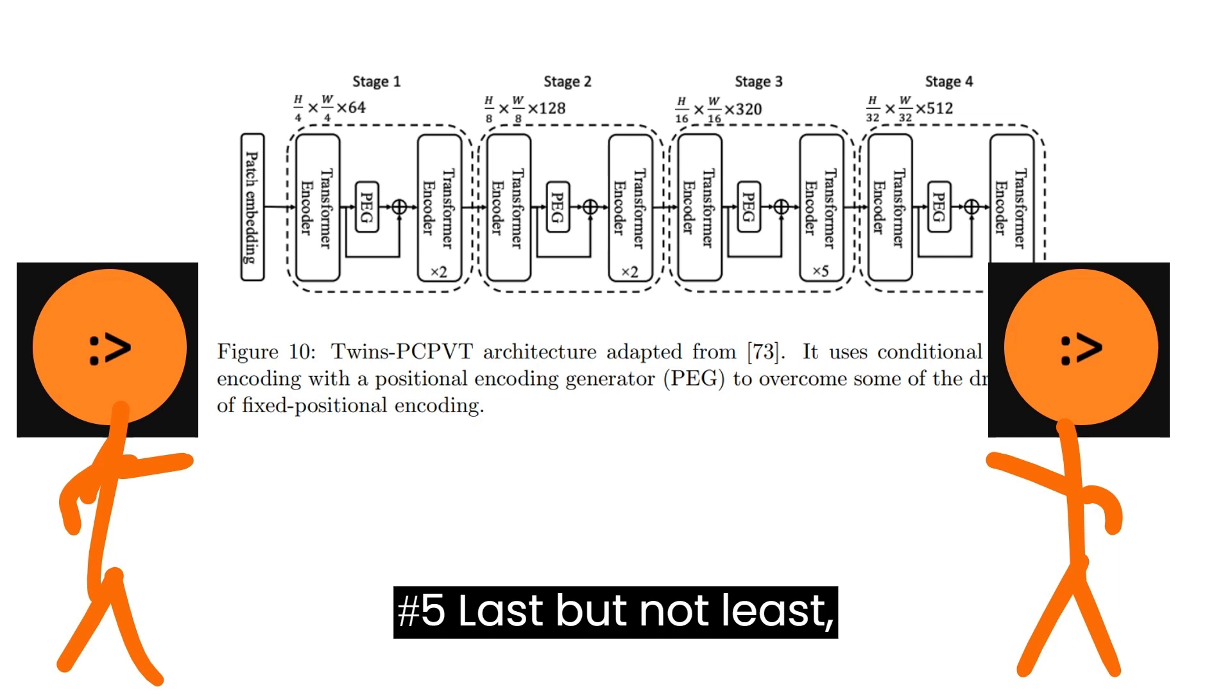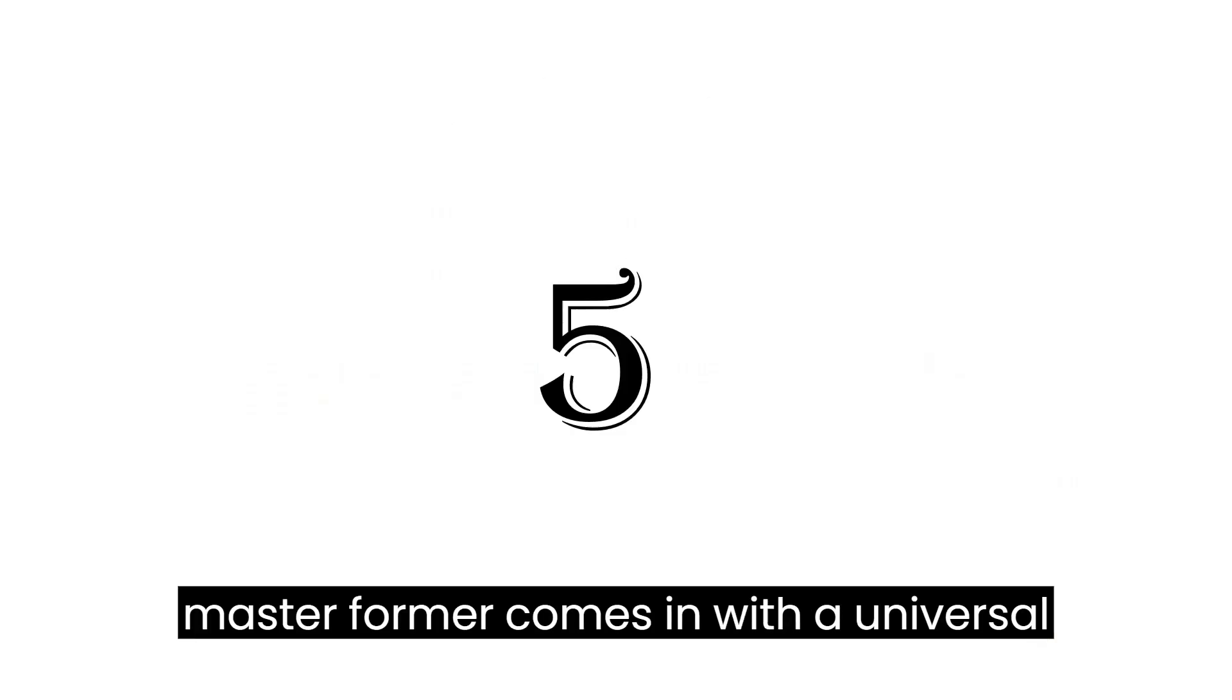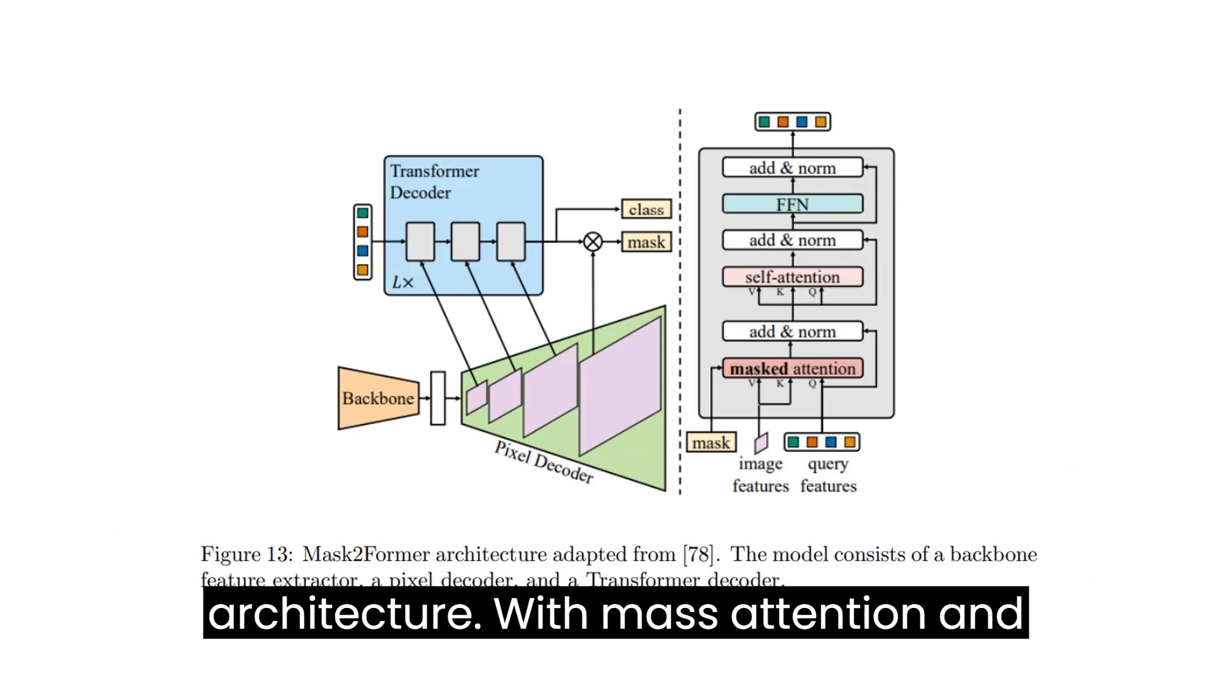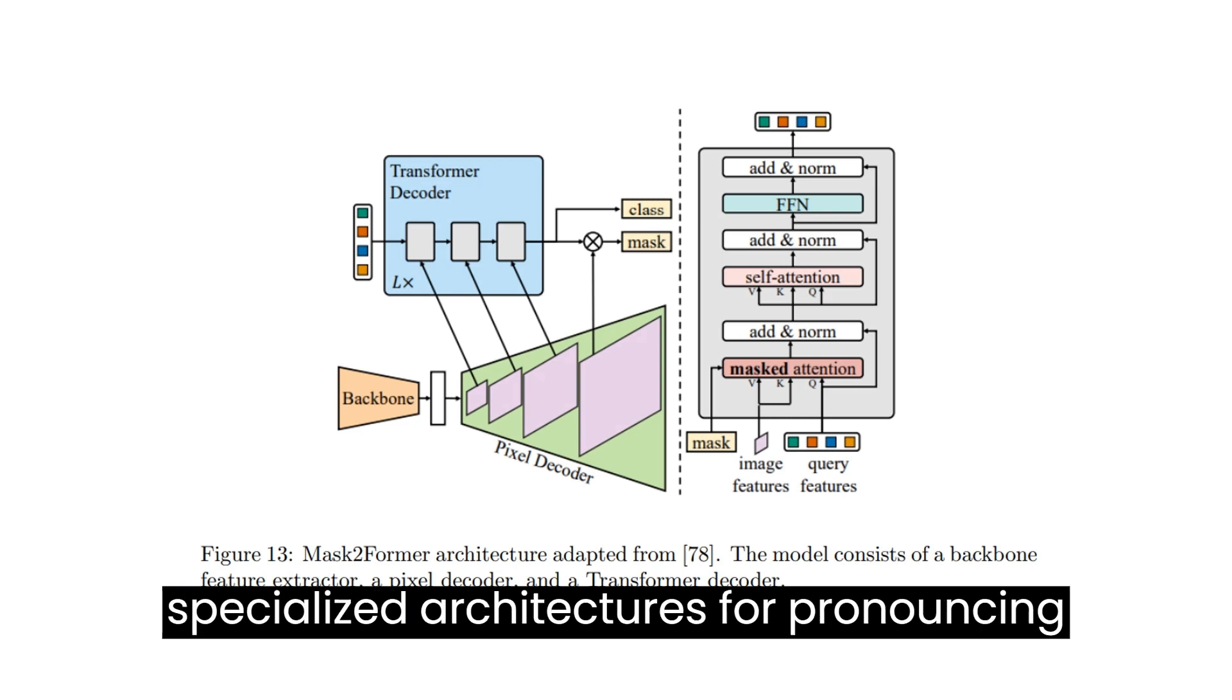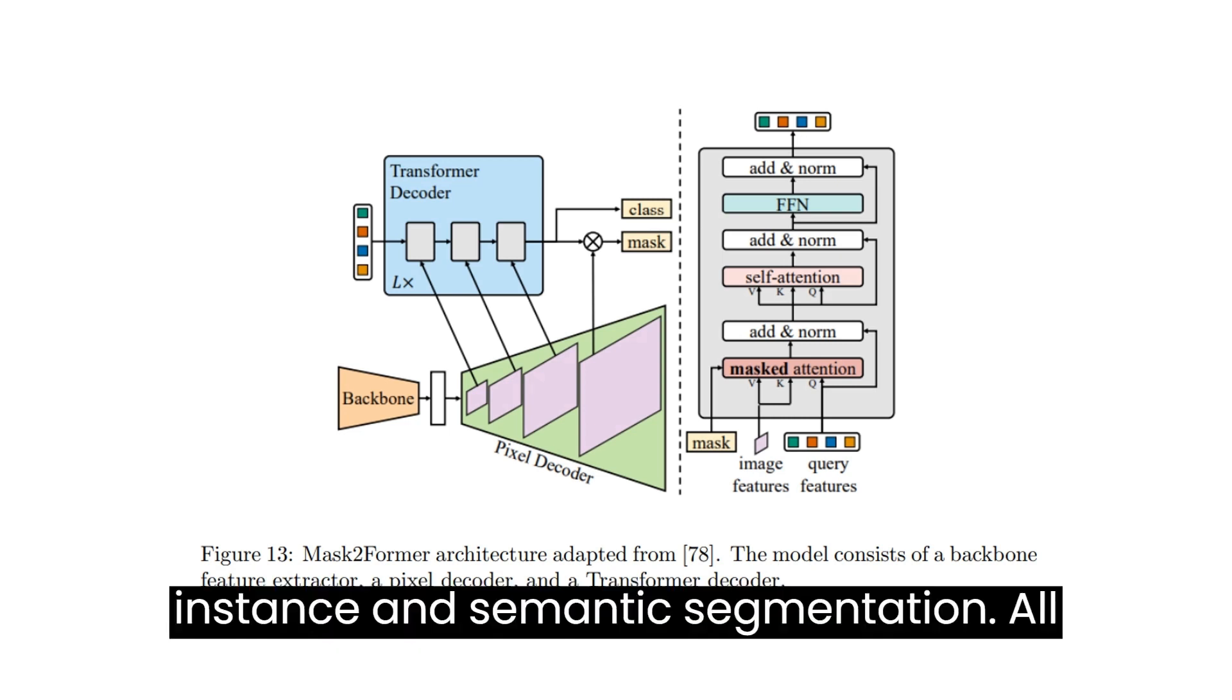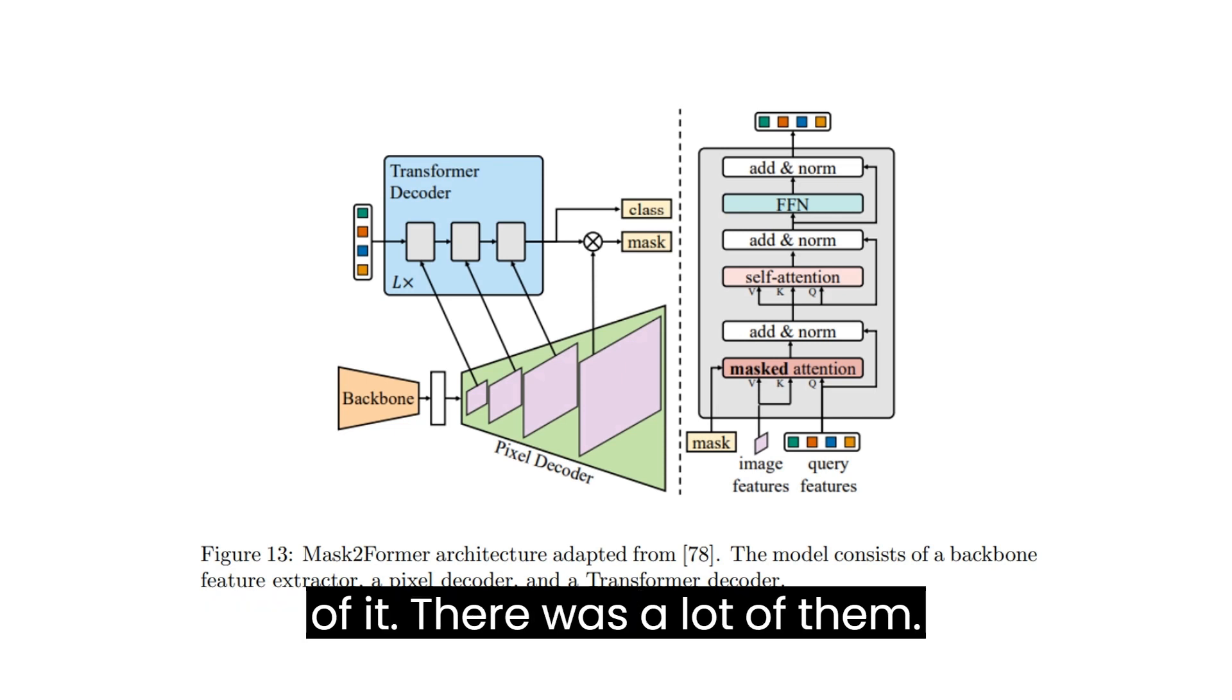Number five, last but not least, Mask transformer comes in with a universal architecture with mask attention and a transformer decoder. It's like the Swiss Army knife of segmentation, outshining specialized architectures for panoptic, instance, and semantic segmentation. All of it. Whoop, that was a lot of them.